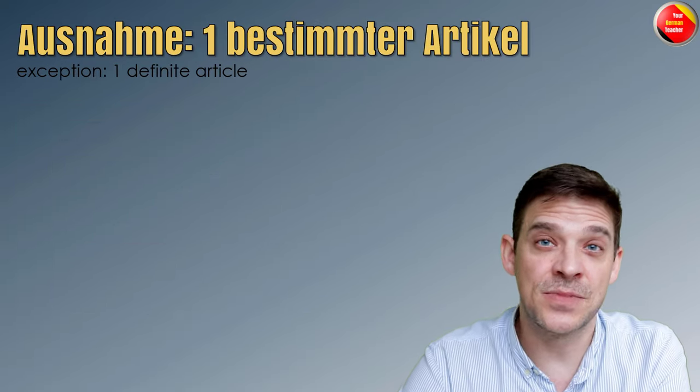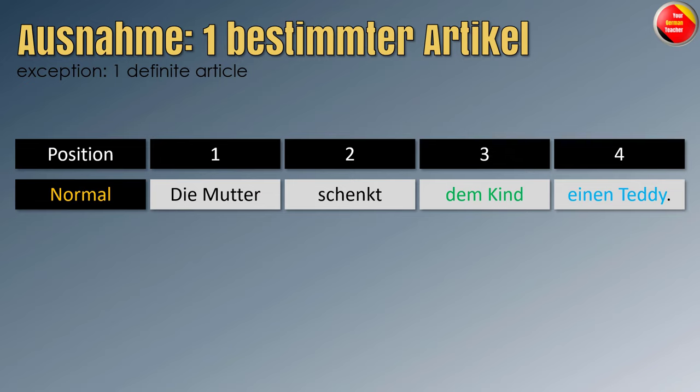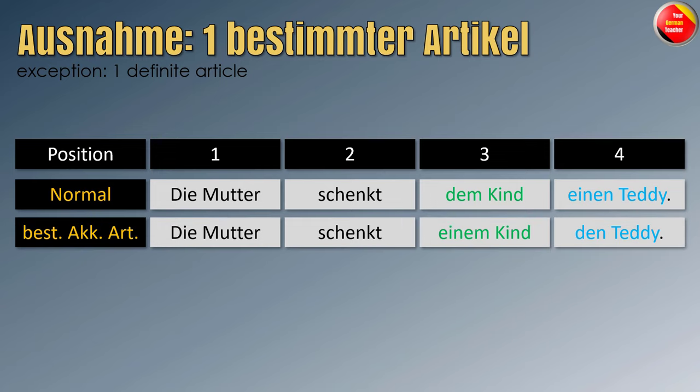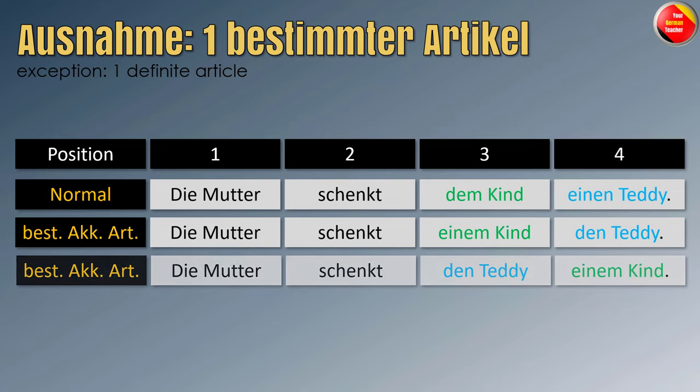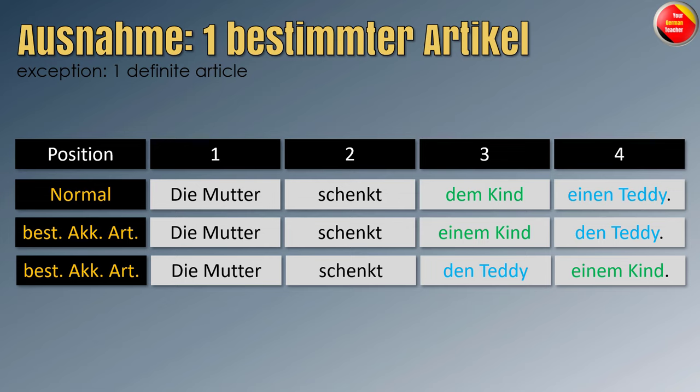Ausnahme Nummer eins: ein bestimmter Artikel. We have the same sentence: Die Mutter schenkt dem Kind einen Teddy — das ist der normale Satz. Jetzt mit bestimmtem Akkusativartikel: Die Mutter schenkt einem Kind den Teddy. Here the accusative object gets the definite article but the sentence structure is still the same. But because it's a definite article, you can also change this — you can say: Die Mutter schenkt den Teddy einem Kind. If the accusative object has a definite article, you can actually put it in front of the dative object.